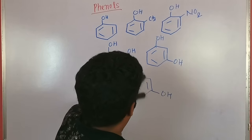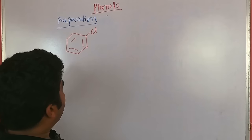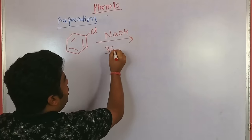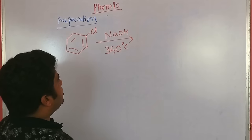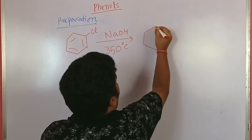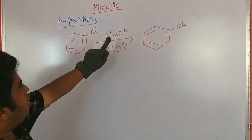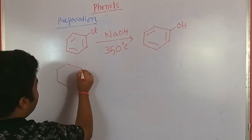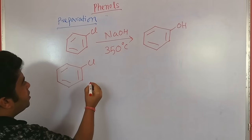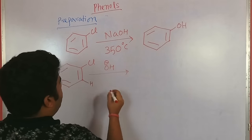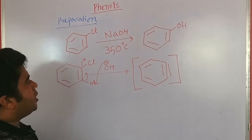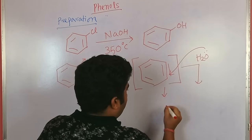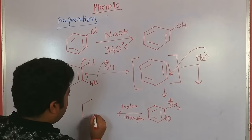We will now see the various syntheses of phenol. Halobenzene, when reacted with a strong base like NaOH under vigorous conditions — 350°C and high pressure — gives phenol. Though it looks like normal nucleophilic substitution, the actual reaction pathway is different. Here, the halobenzene undergoes elimination in the presence of OH⁻ to form a benzyne intermediate. Benzyne is a very unstable intermediate, so it is immediately attacked by a water molecule followed by proton transfer to give phenol.